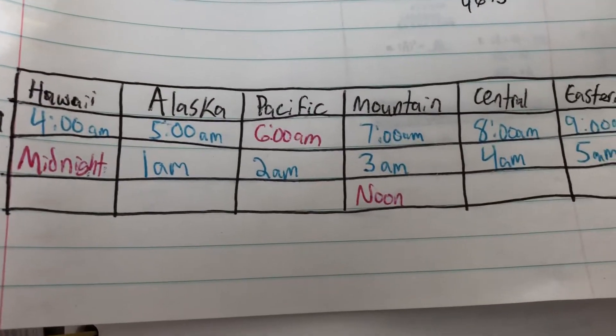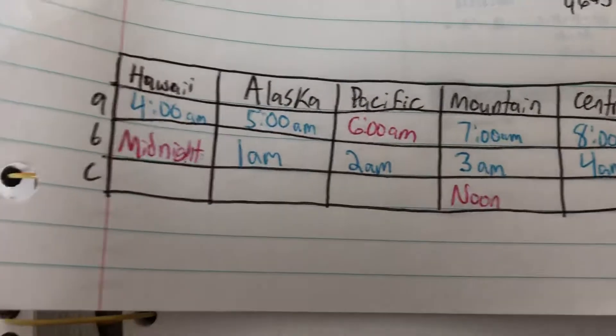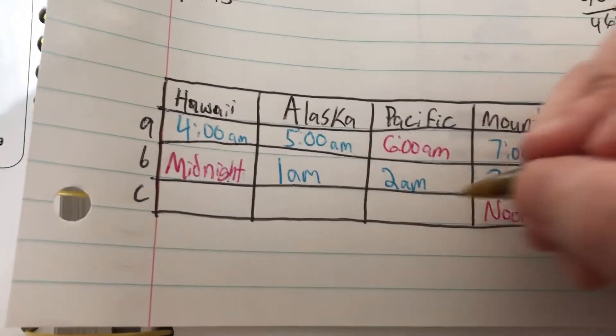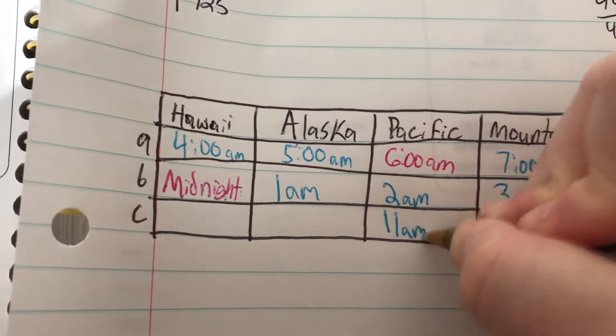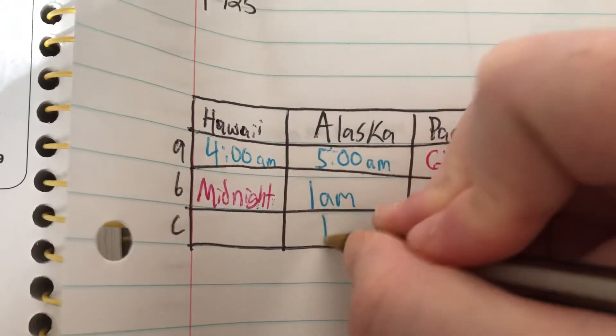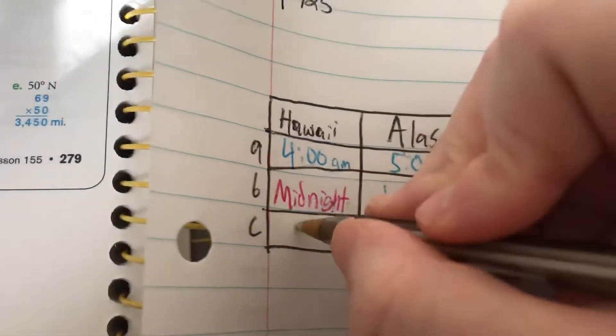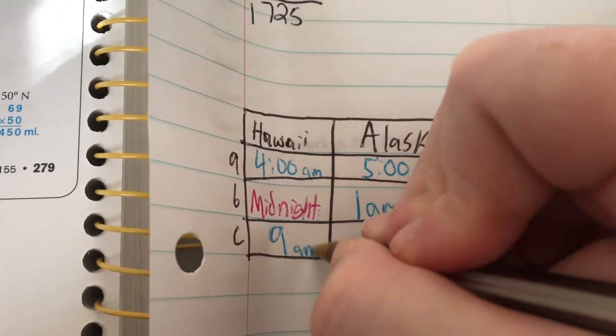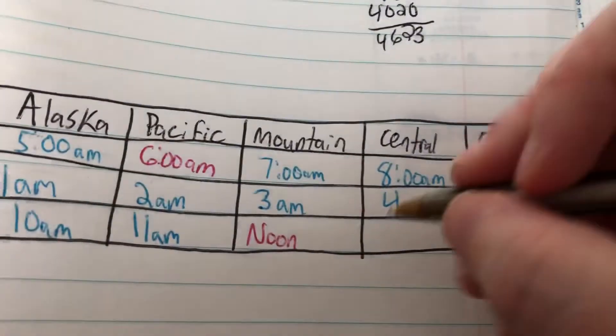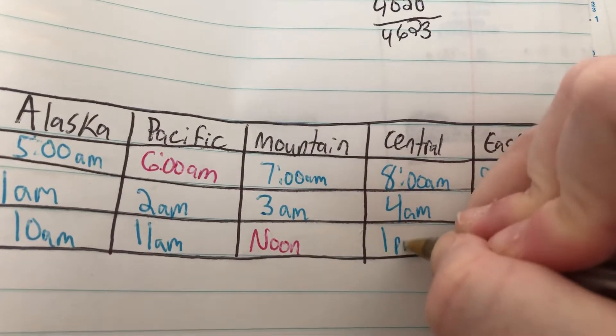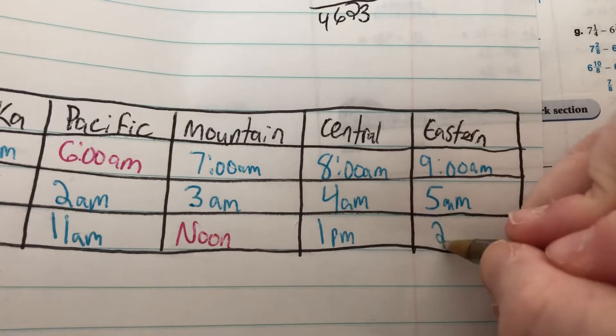And then for C it gives us noon in the mountain time zone. So the farther west we go the earlier it will be. So in Pacific it will be 11 a.m., in Alaska it will be 10 a.m., and in Hawaii it will be 9 a.m. And then going to the east in Central it will be 1 p.m. and Eastern it will be 2 p.m.